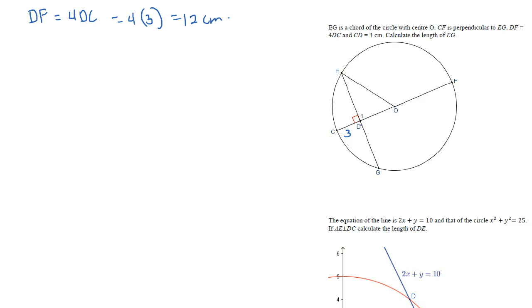So DF is 12 centimeters and CF is 15 centimeters — since 3 plus 12 equals 15 cm. That means OF, which is the radius, is 7.5 cm.